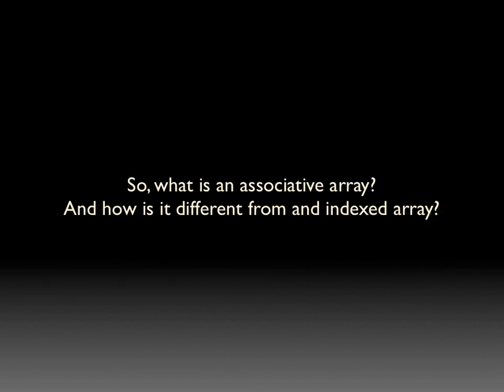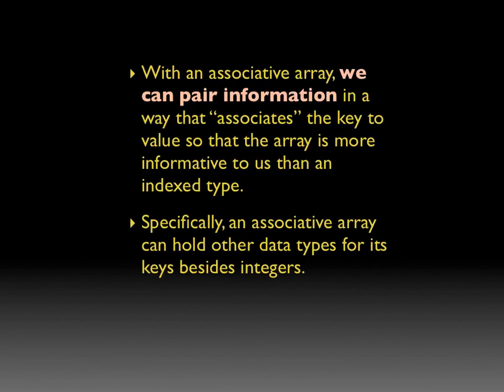So what is an associative array, and how is it different from an indexed array? With an associative array, we compare information in a way that associates the key to the value, so that the array is more informative to us than a simple index type. Specifically, an associative array can hold other data types for its keys besides integers.